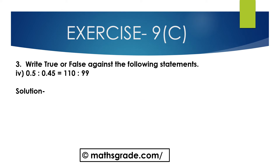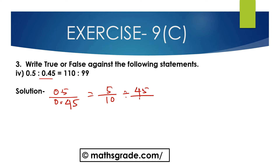Now, 4th bit: 0.5 is to 0.45 is equal to 110 is to 99. We have to check this is true or false. For 0.5 is to 0.45: 0.5 is 5 divided by 10, and 0.45 is 45 divided by 100 — since there are 2 digits after the decimal point, we write 100. Multiplying 5 divided by 10 by the reciprocal of 45 divided by 100 gives 100 divided by 45. Canceling 10 with 100 and 5 with 45 gives 10 divided by 9.